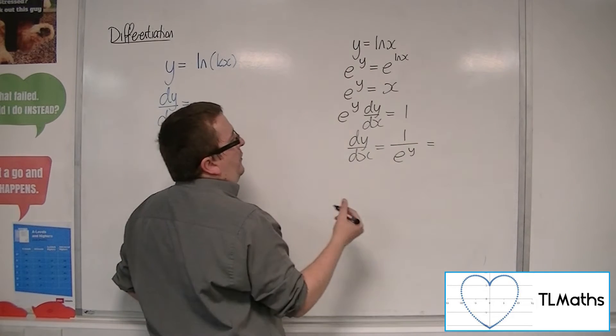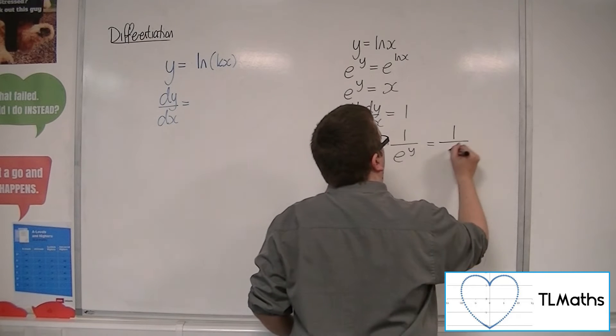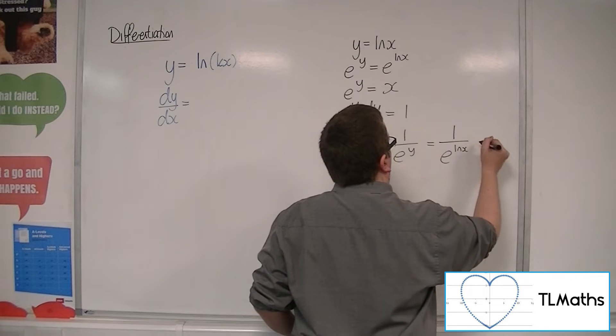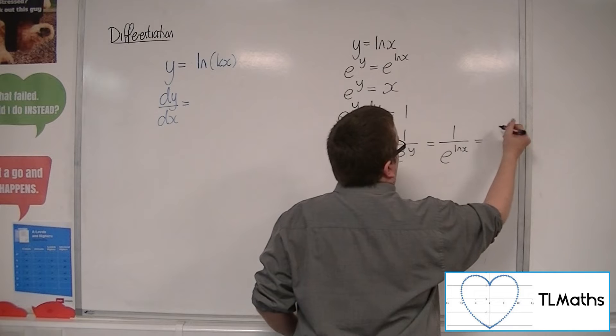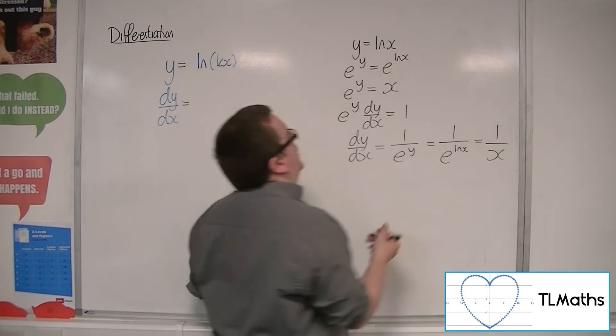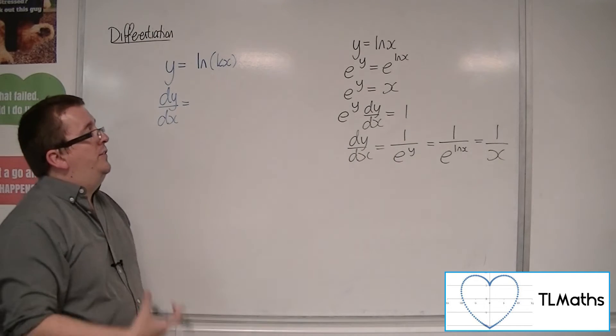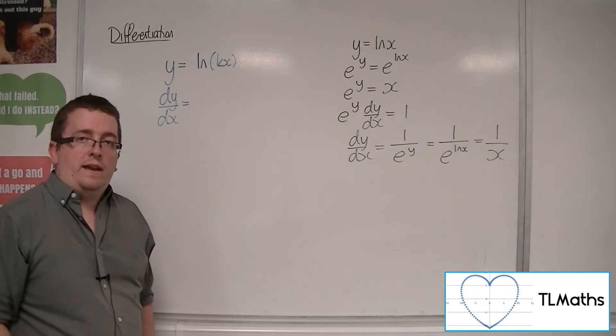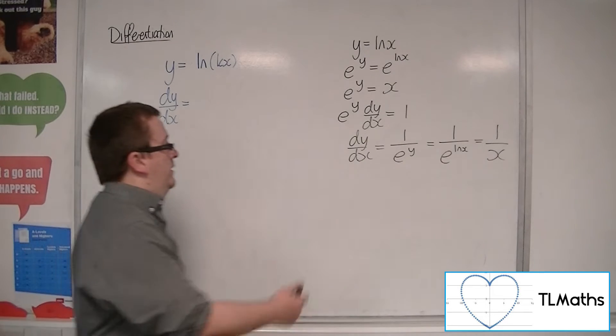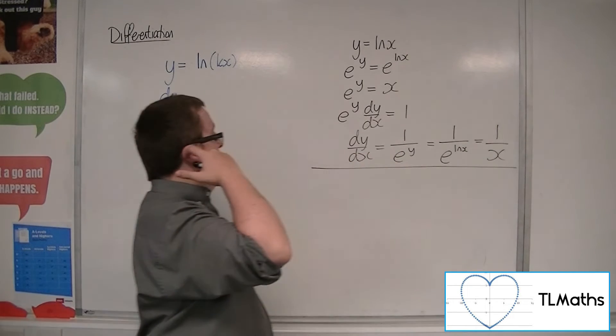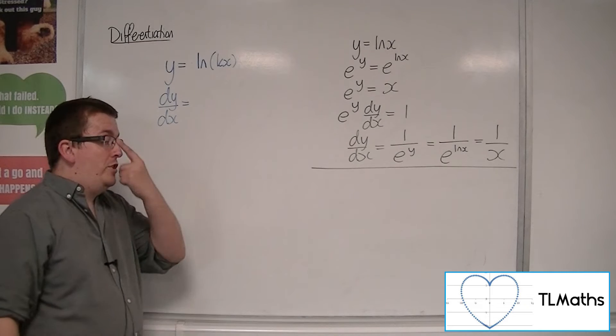Now y, remember, was ln of x. And so e to the ln x is just x. So y equals ln of x differentiates to 1 over x, strangely. And that's how we do it. That's how we show it, using implicit differentiation.